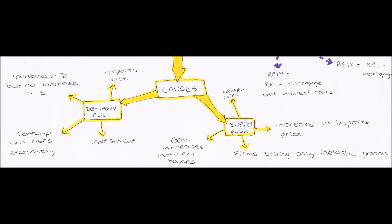We have two types of causes: demand-pull causes and supply-push causes. Our demand-pull causes will be anything that increases aggregate demand. If aggregate demand increases and the curve shifts right, our price increases from P1 to P2, so the price level increases and inflation occurs because inflation is a rise in price.